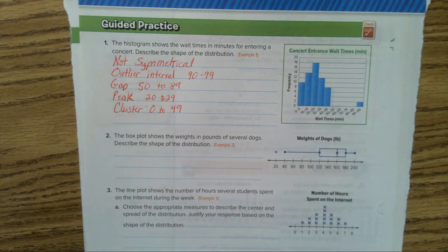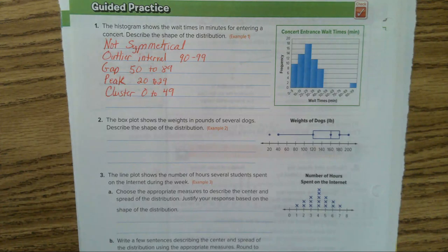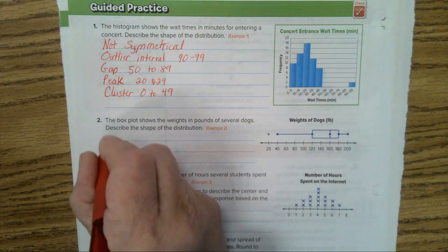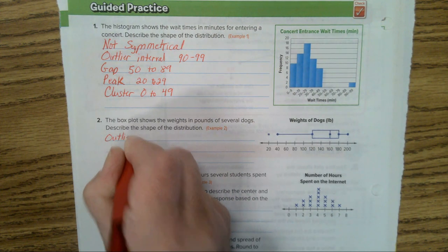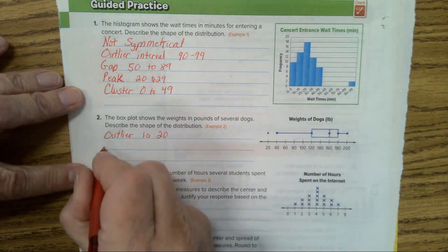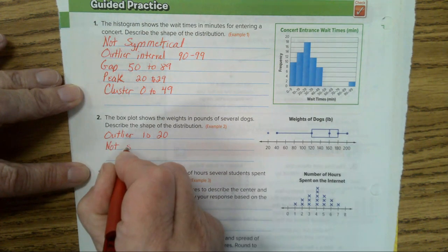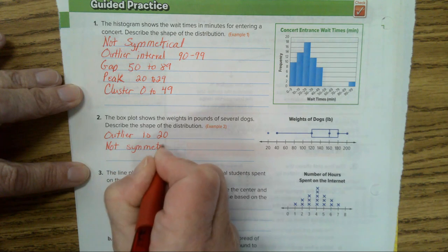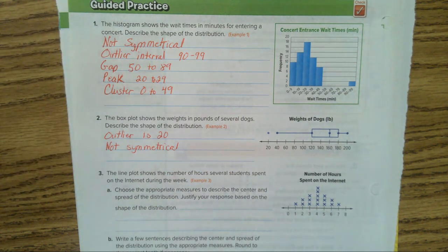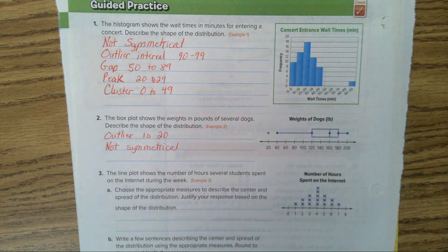Let's look at number two. The box plot shows the weights in pounds of several dogs. Describe the shape of the data. Well, here we know there is what in this problem? An outlier. The outlier is 20. Is it symmetrical? It's not symmetrical. We don't know if there's a gap, do we? And you can't tell if there's a peak, can you? That's about all that we can really do. We can do these two, but you can't determine anything else, can you?